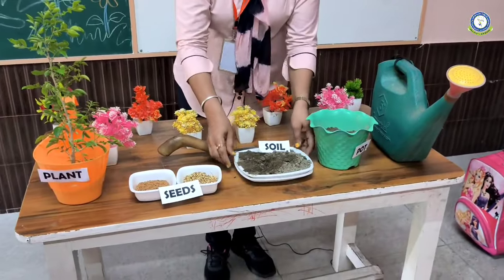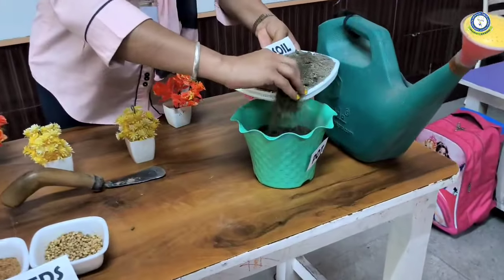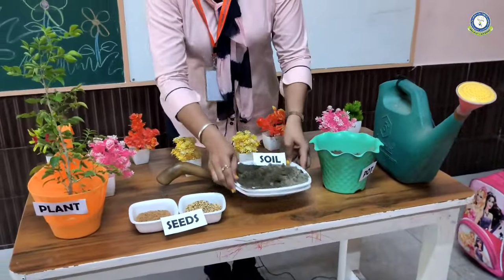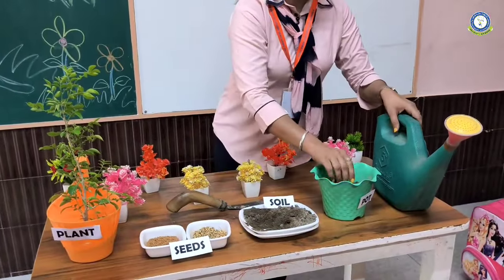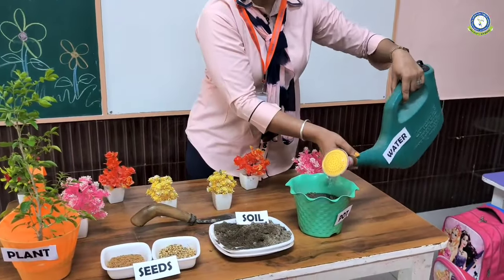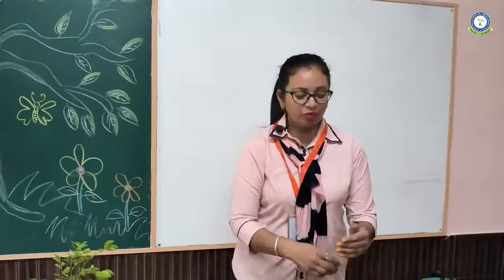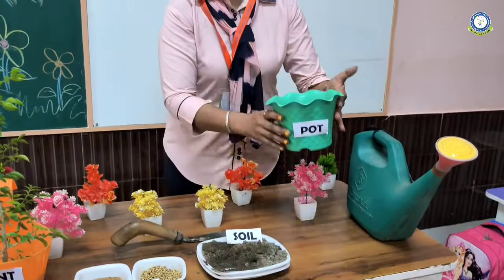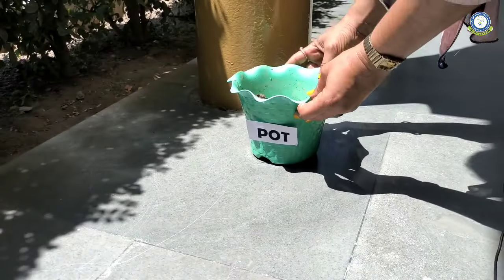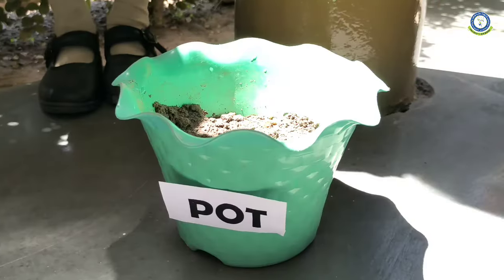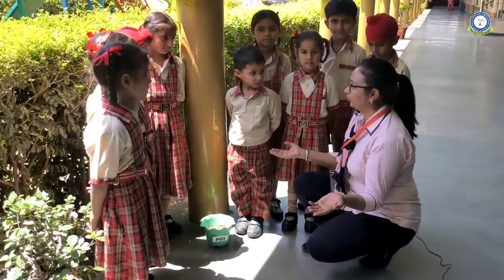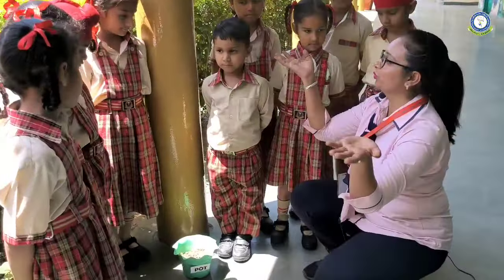Then add more soil over it. After that, we will pour a little bit of water on it. Now we have to keep the pot where it will get sufficient sunlight, and we have to water it every day. After a few days it will grow into a plant.